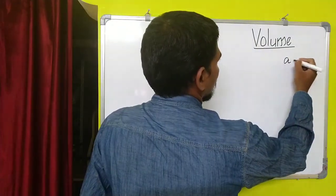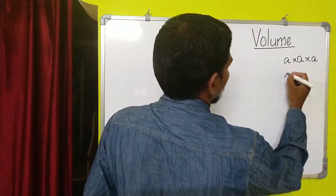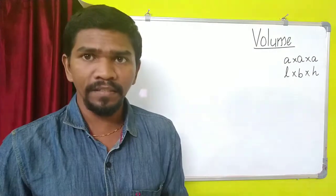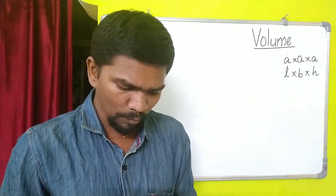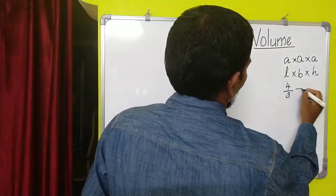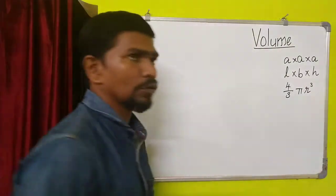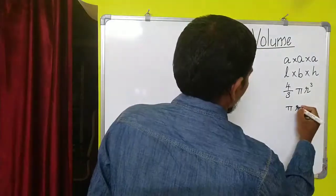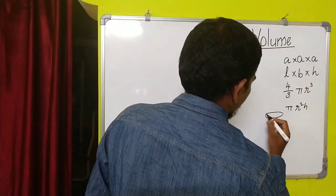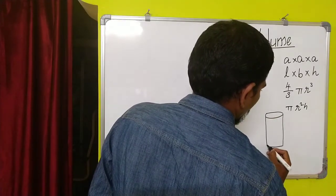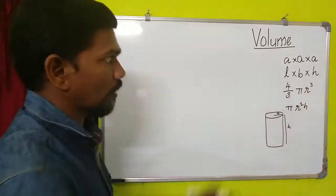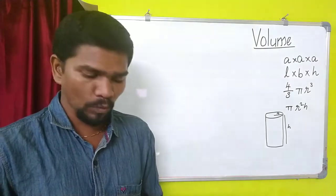Today we are going to see about regular shapes and irregular shapes volume. For regular shapes: for a cube it is a × a × a; for a cuboid it is l × b × h. They also give a sphere and a cylinder — four shapes with four formulas. For a sphere it is (4/3)πr³ — cube means we put r three times. For a cylinder it is πr²h — the cylinder has a circular shape with radius r and height h.